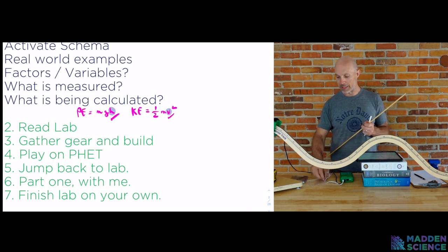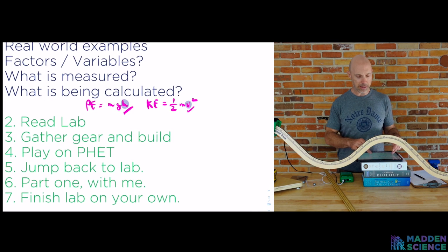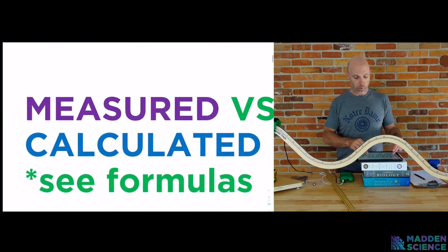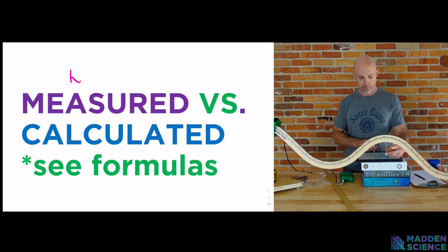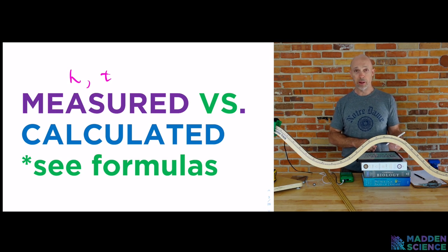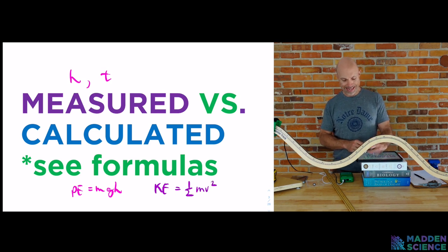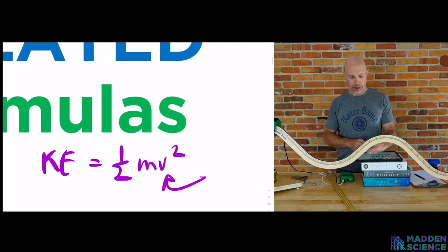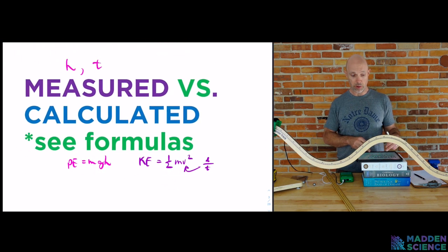And knowing the diameter of this marble, we can use velocity equals distance divided by time to figure out how fast the marble is going at each point. Keeping in mind that, yes, the marble is in fact accelerating at all times. So we're in lab. We just talked about what's being measured, what's being calculated. In this case, we are measuring the height and the time. From the height, we're going to calculate potential energy. We'll need to know the mass of that ball bearing too. And then the kinetic energy. We're going to have to get to velocity right here. And we're going to get there by the diameter of the marble divided by the time it takes to pass this photo gate.